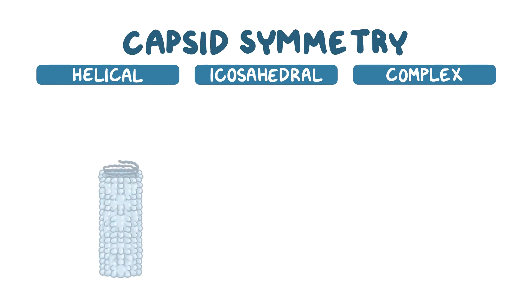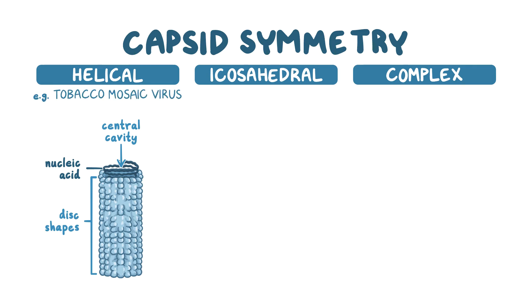First, the helical viruses have a capsid with a central cavity or a hollow tube, which is made by proteins arranged in a circular fashion, creating a disc-like shape. The disc shapes are attached helically, creating a tube with room for the nucleic acid in the middle. An example of a virus with helical symmetry is the tobacco mosaic virus, which is the most studied example.